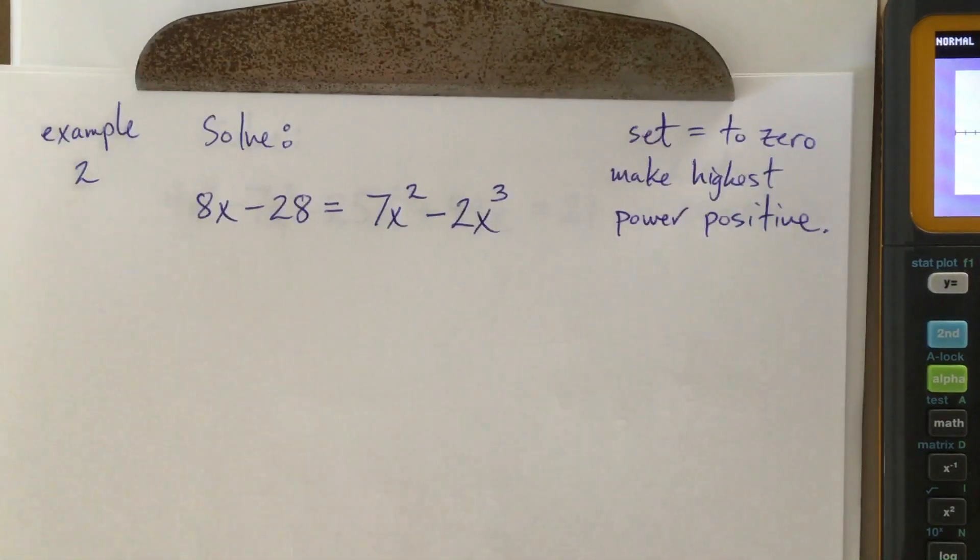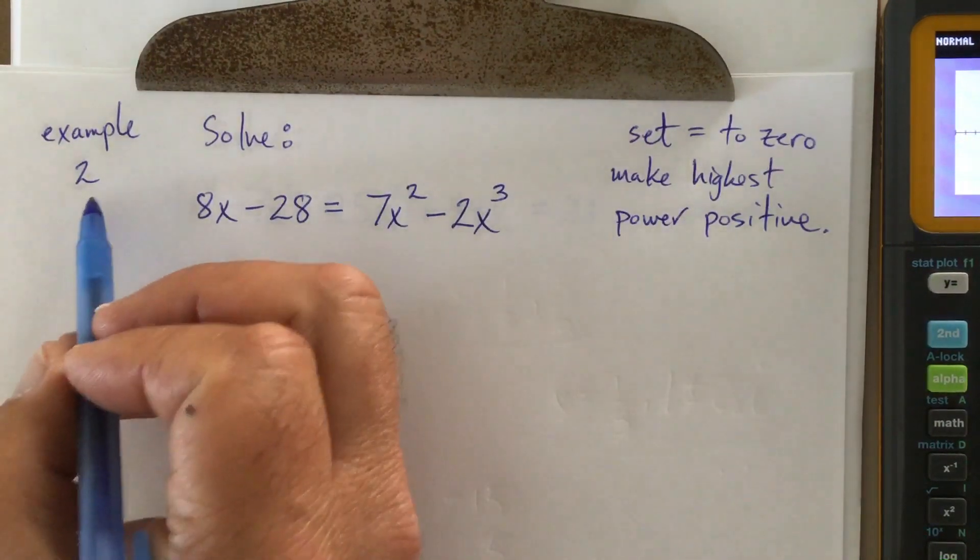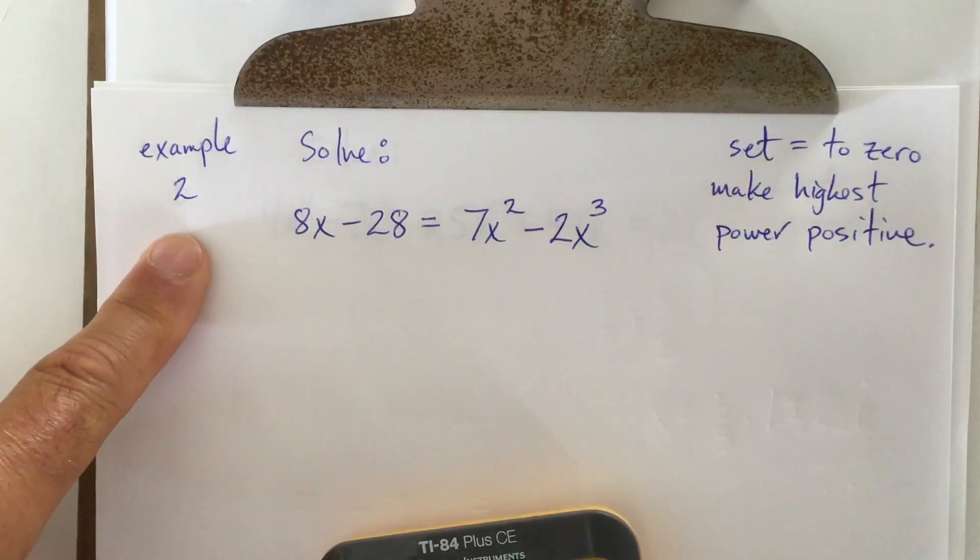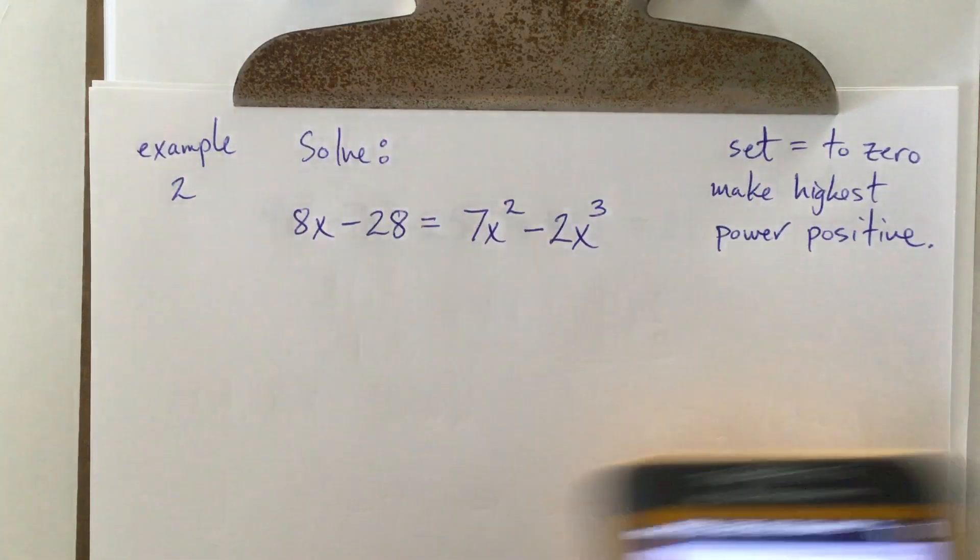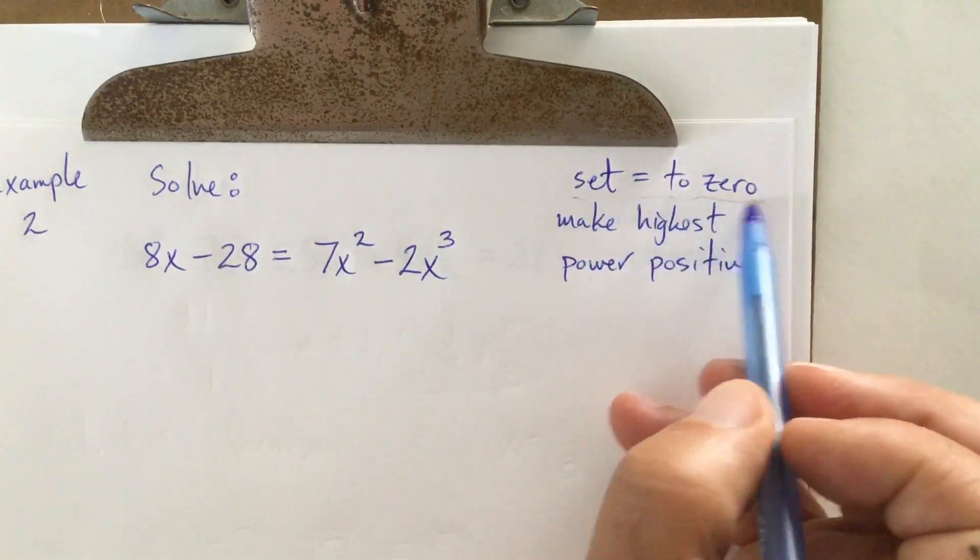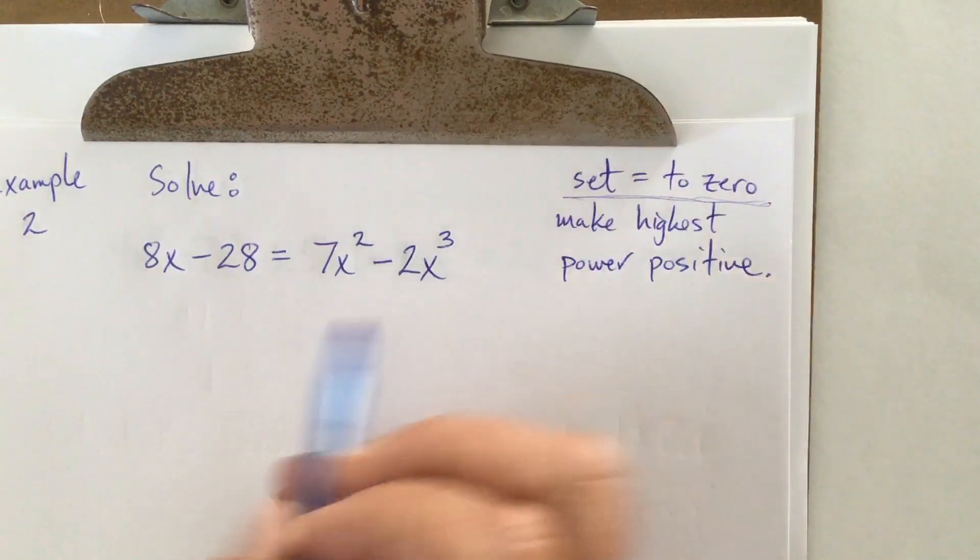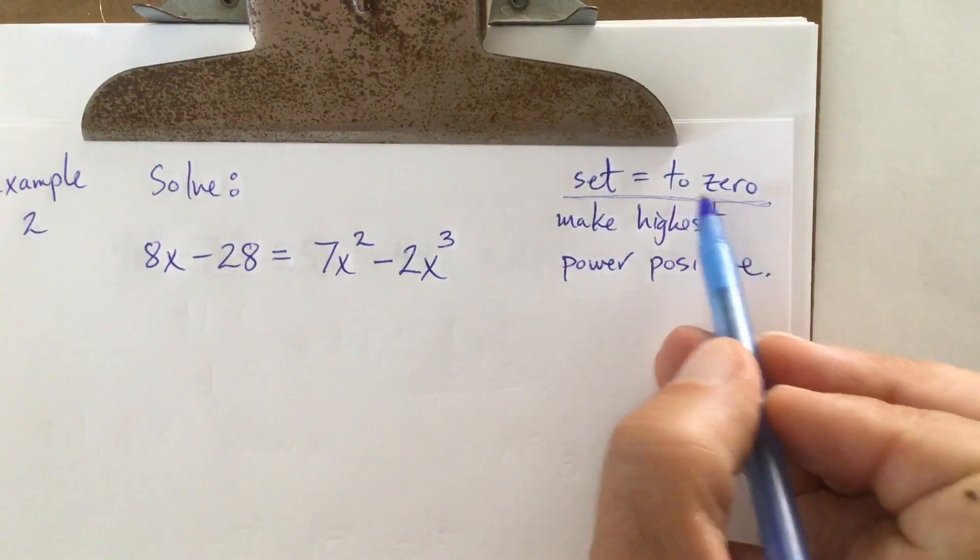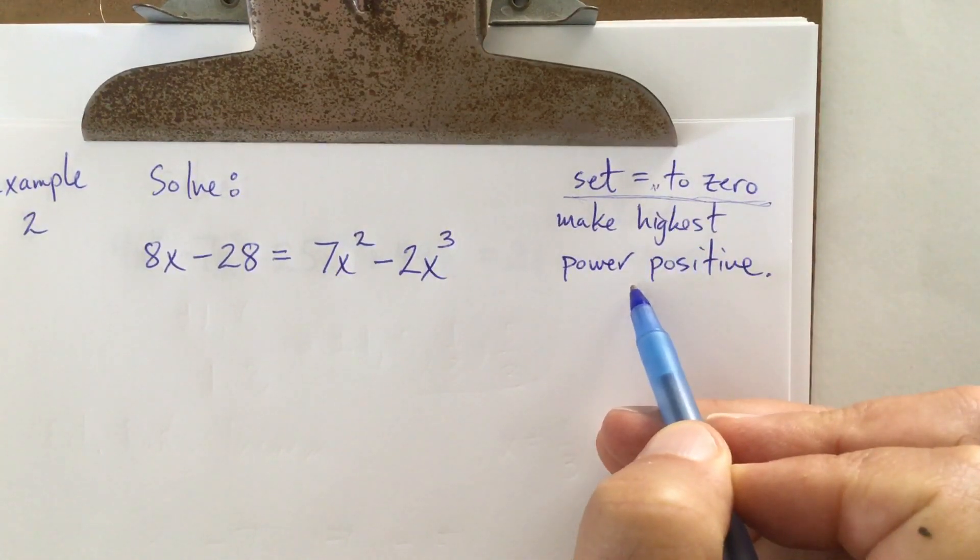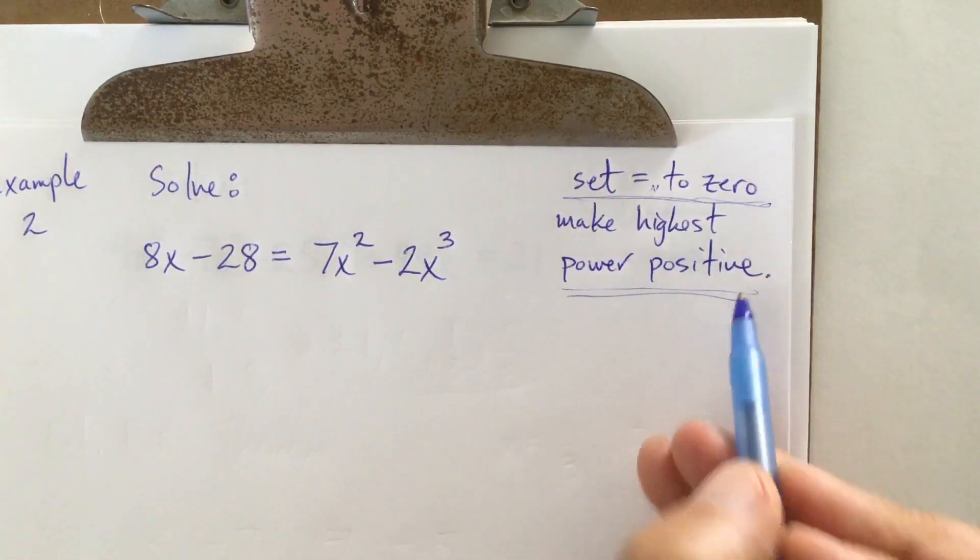Now, this is an equation, but what am I trying to get at with, sorry, with example two? What am I trying to get at? I want to cover all the bases with you guys. I want you to remember that to solve a polynomial equation or to find x-intercepts, whatever they're talking about, you know, you got to set it equal to zero. Now, the other thing I want you to get out of this is make the highest power positive.